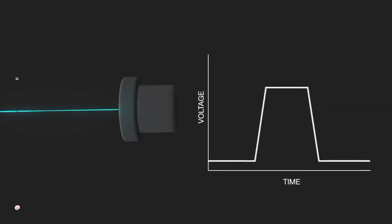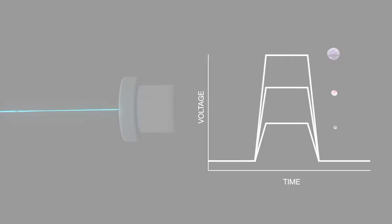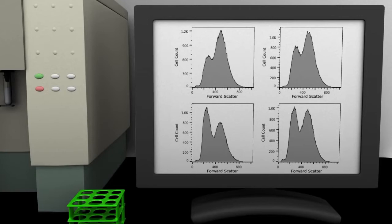The detector converts the scattered light into a voltage pulse which is directly proportional to the amount of forward scattered light. The computer converts these data into a histogram plot with the amount of forward scattered light on the x-axis and the number of cells on the y-axis.